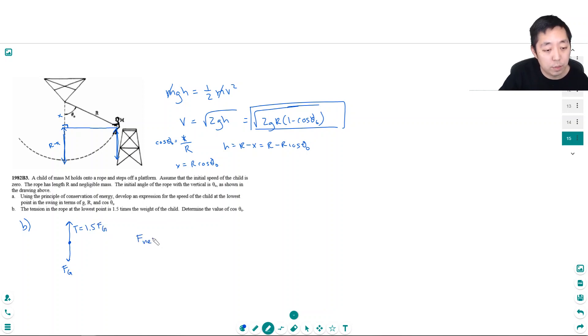So the net force at the bottom is upward. It's equal to 0.5 times the weight of the child. 1.5 Fg, this is t minus Fg. So it's 1.5 Fg minus Fg. That's equal to 0.5 Fg, that's 0.5 Mg.